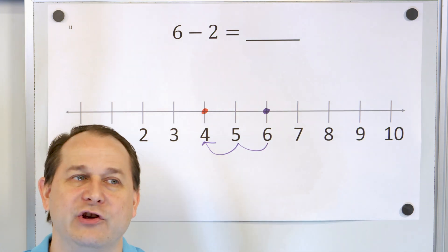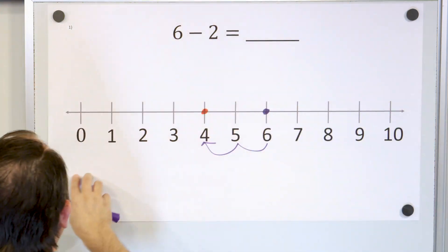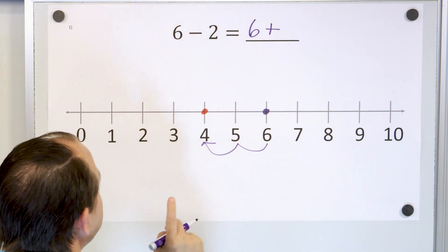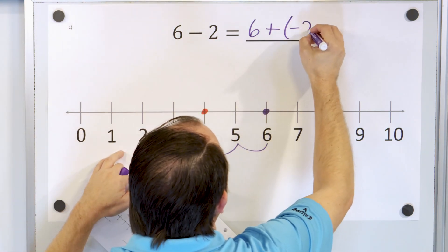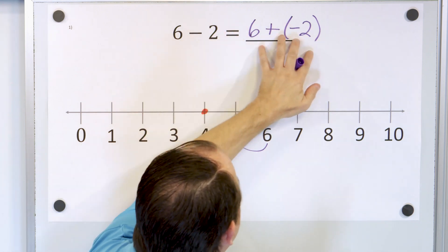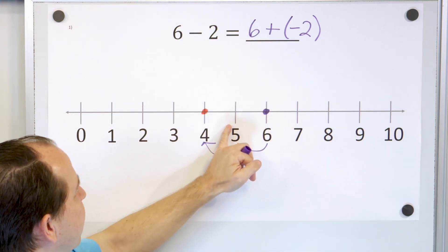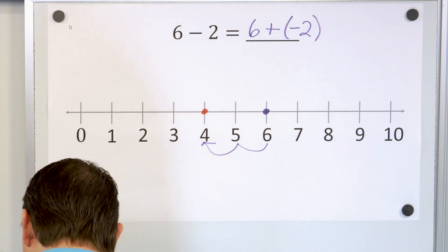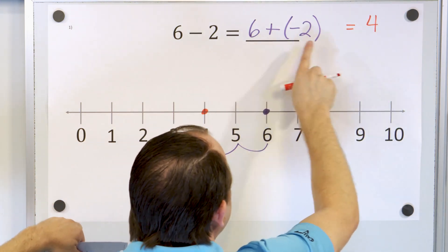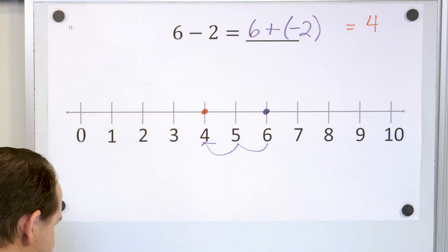I'm choosing a simple problem so that you know the answer already. But this subtraction — I want you to get in the habit of realizing the following: it can be thought of as really addition. In other words, this subtraction can be thought of as six and adding to it something a little different — you can be adding negative two. So six plus a negative two. I want you to start to think about how these two things look so different from each other, but they actually mean the same thing. The answer is four.